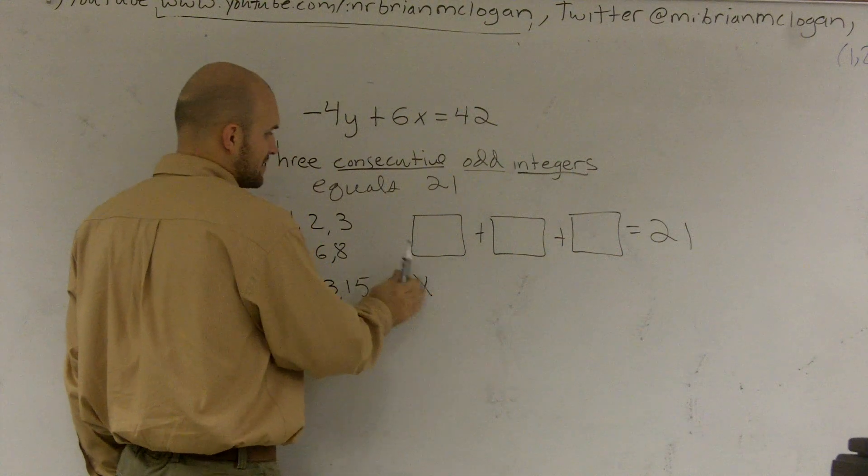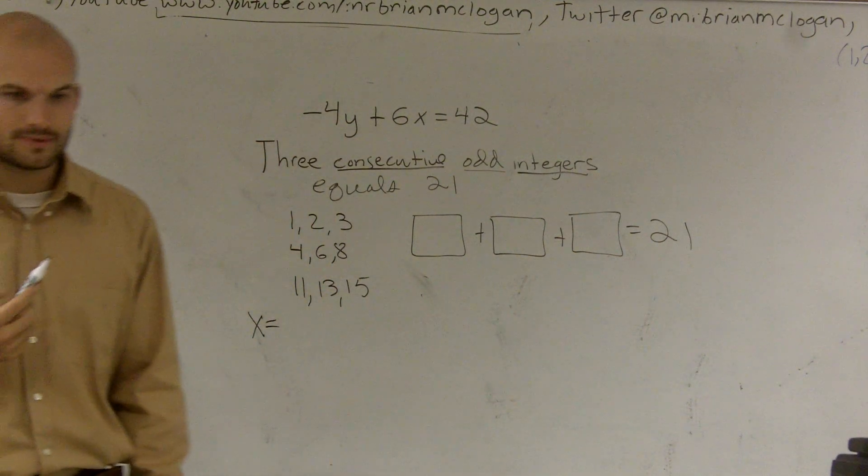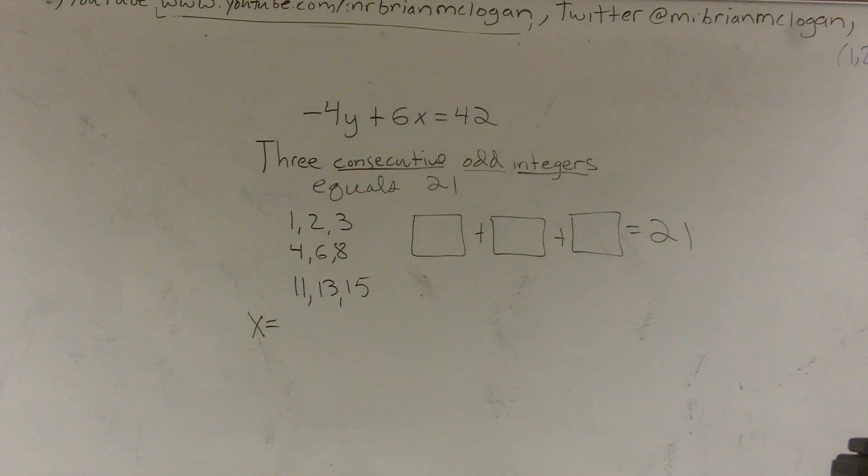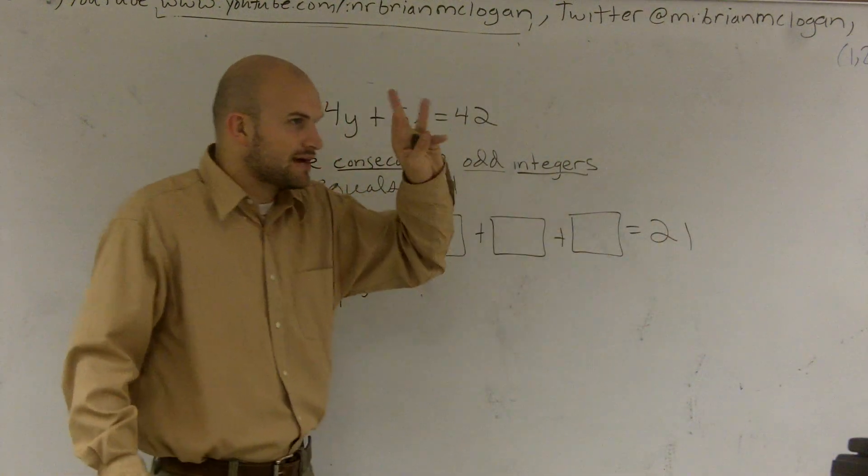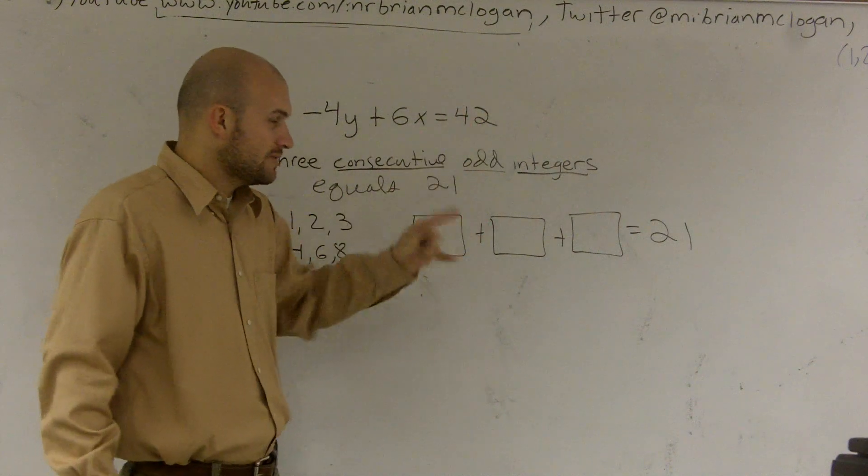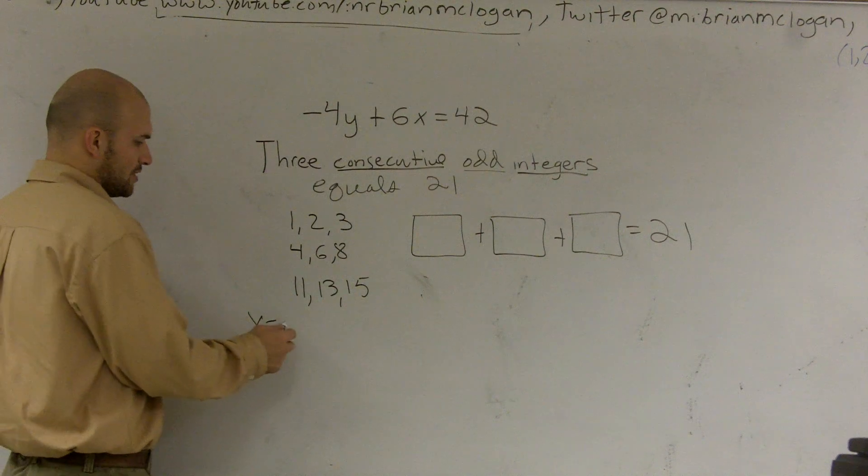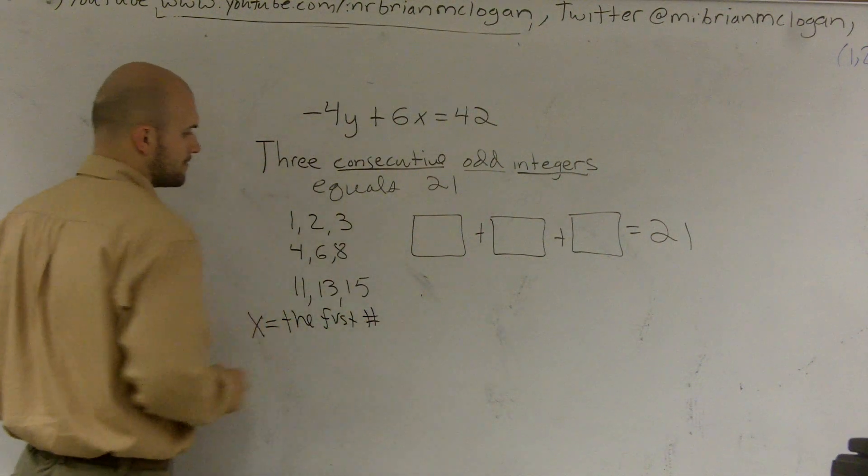And you want X to represent what? Well, you know 21 is the number. So what is it you don't know? The first variable. Good. You don't know what the first number is. You don't know what any of the numbers are, but you can't do X, Y, Z, because then you'd have three different numbers to solve for. And we can only solve for one variable with one equation. So X equals, let's call it the first number.